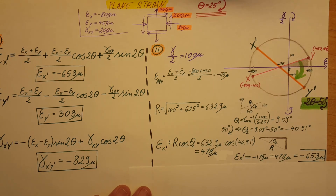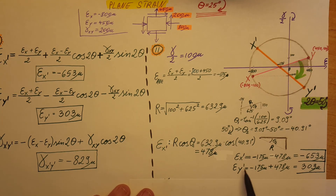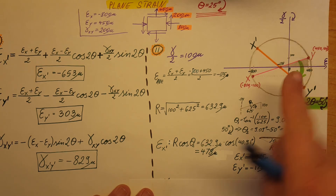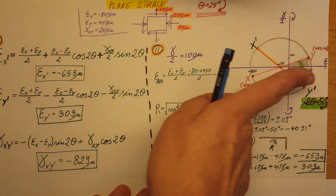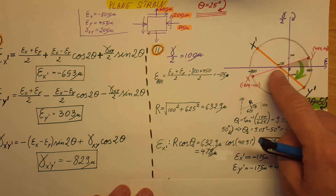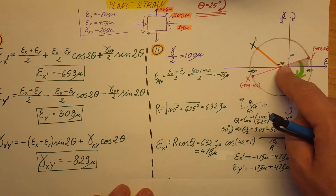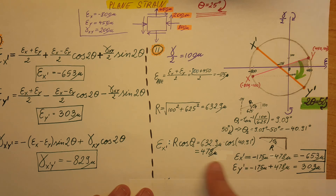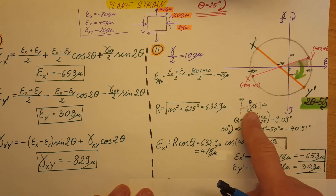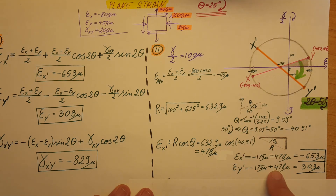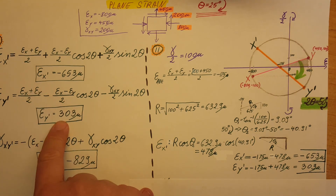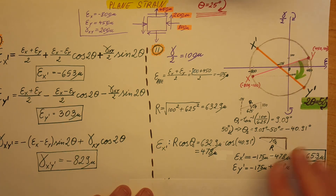Epsilon in the Y prime direction is straightforward. Starting from the average of negative 175 and adding the distance of 478 microns in the positive direction, we get epsilon Y prime equals negative 175 plus 478, which equals 303 microns.